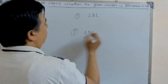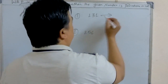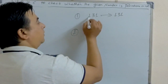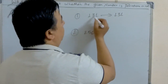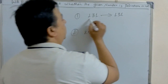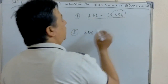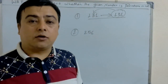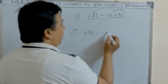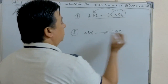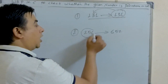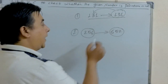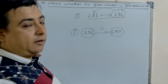For example, consider the numbers 131 and 256. When we reverse 131, it becomes 131. The original is 131 and the reverse is 131 — they are equal. That's why 131 is a palindrome number. But when we reverse 256, it becomes 652. The original number is 256 and the reverse number is 652 — it is not equal. That's why 256 is not the palindrome number.